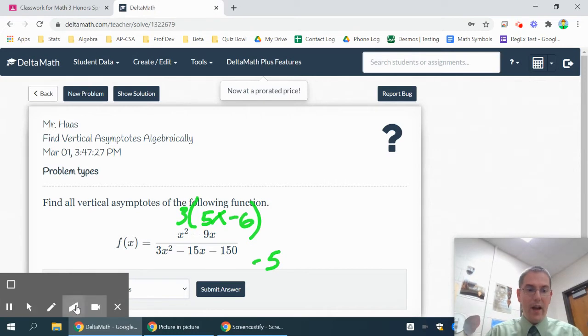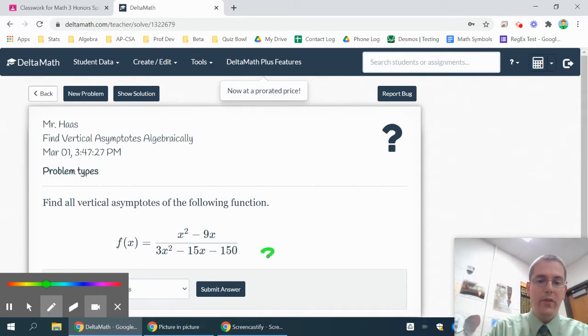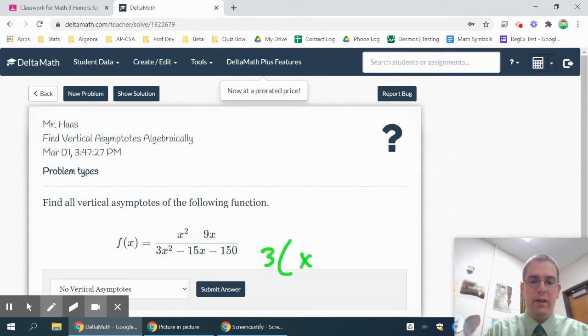If I have something like this, I need to see what I can do about factoring out the bottom. I know all of these have a 3, so I could start by taking out a 3. That'll leave me with an x squared minus 5x and then minus a 30.